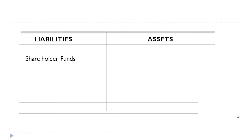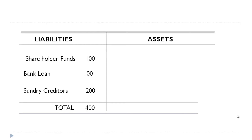So what are the sources of funds for this business unit? The first is shareholder funds. Shareholders have invested say 100 crore, then bankers have given a loan of 100 crore, and suppliers have given credit to the extent of 200 crore. So the total funds mobilized by this business unit is say 400 crore. All these funds are called capital employed in the business — total capital employed in the business.